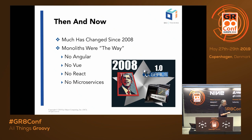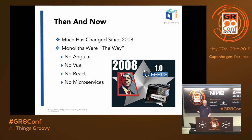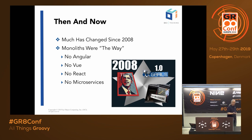The framework predates 1.0 by more than a year, so depending on what you call day one, it is 11 or 12 years old — well over a decade. Around the time we started creating the Grails framework, call it 2007, there were a lot of JVM web frameworks trying to emerge around the same time.